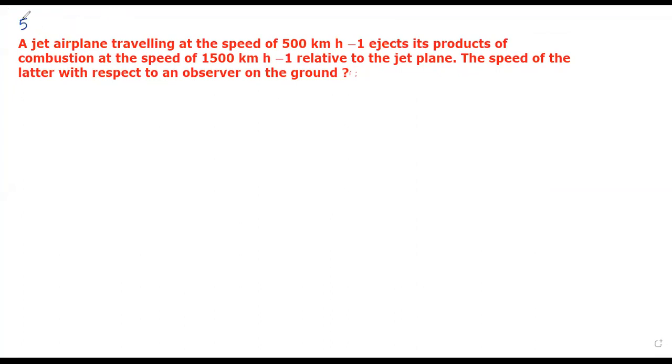Question number 5: A jet airplane traveling at the speed of 500 km per hour ejects its products of combustion at the speed of 1500 km per hour relative to the jet plane. The jet airplane is running at 500 km/h and ejecting combustion products at 1500 km/h relative to the jet plane. We need to find the speed of these products with respect to an observer on the ground.